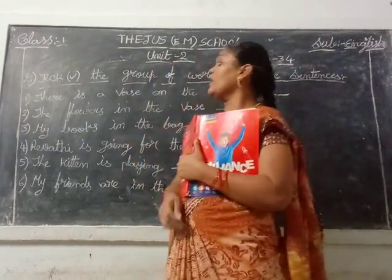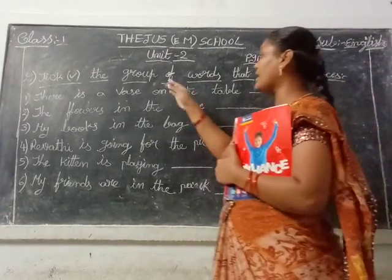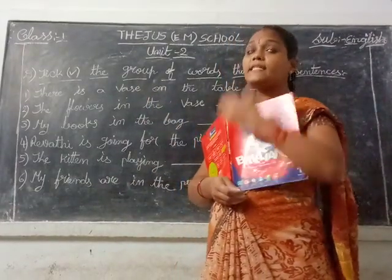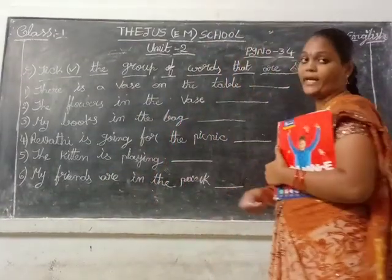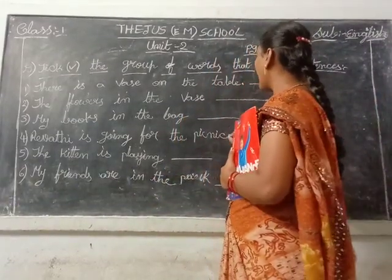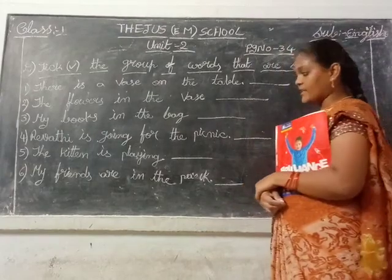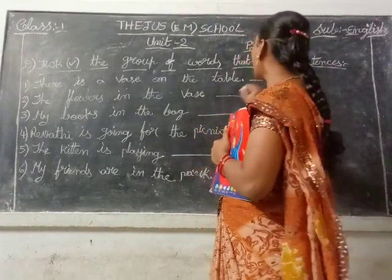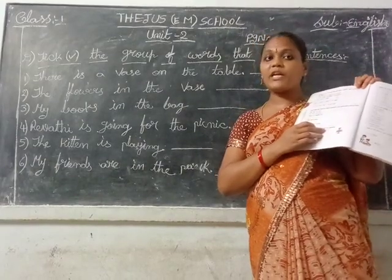Okay children, see our next one. Dear Roman: tick the group of words that are sentences. Some sentences are given here. Which is the completed sentence — you tick that blank. First one, see children: 'There is a vase on the table.' That is the correct sentence, children. So you tick that place. Already in your textbook, tick that.